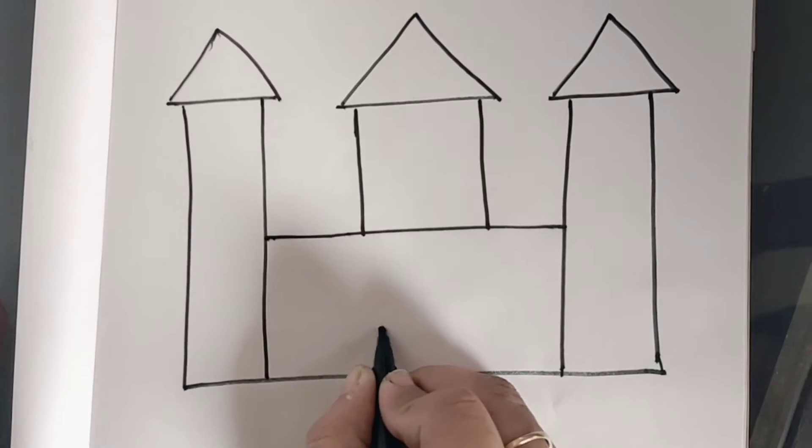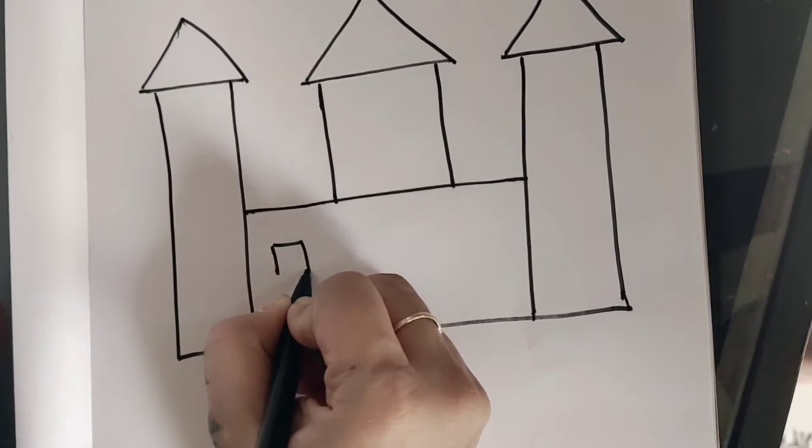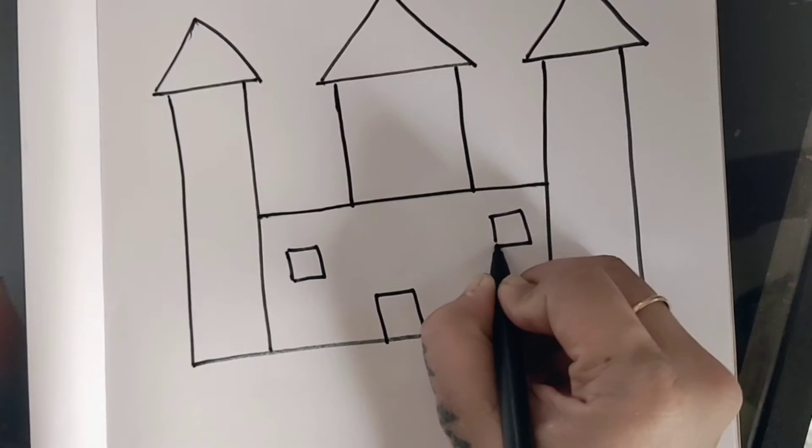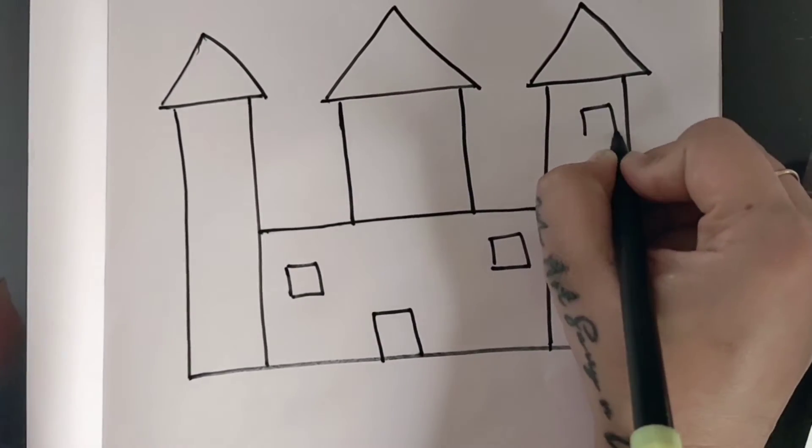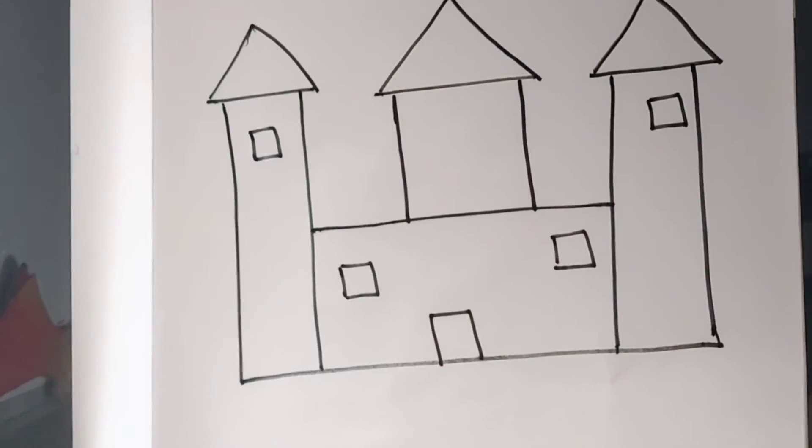Now yahaan pe hum castle ka gate bana dhe. Castle ki one window. Castle ki second window. Yahaan pe hai castle ki third window. Castle ki fourth window.